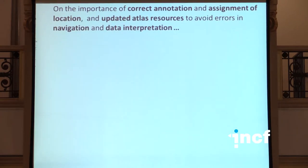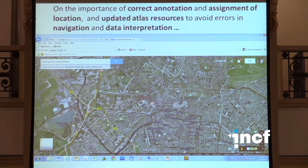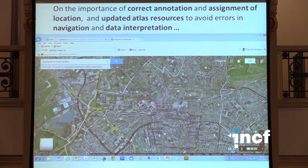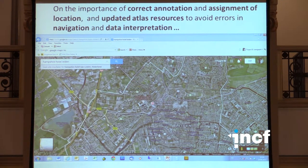I wanted to start with a very short story summarizing what I will talk about, using the frequently used analogy to brain atlasing, which is cartography. When I traveled to Leiden yesterday, I had been assigned to a hotel. Since I studied in Leiden many years ago — 20 years ago — I considered myself an expert in the region. I looked up the location of the hotel in an online atlas and found out it is located between the central station and the academic hospital.